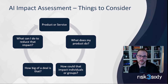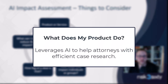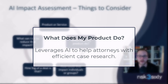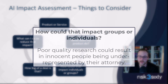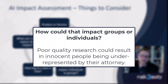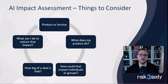Let me give you a concrete example using a law firm scenario. Say you are an AI provider to law firms and you help them generate responses to cases. Your product helps lawyers be more efficient by generating research for them on case decisions. How could that impact groups or individuals? If it returns bad results, it could result in bad conclusions at trial, mistrials, or people going to jail — their lives being significantly impacted.